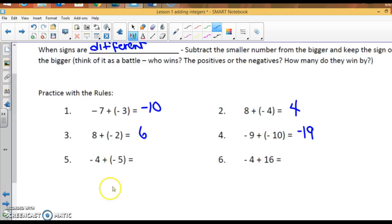Negative 4 plus negative 5 is negative 9. Negative 4 plus 16. I'm going to change this one. Make this 4 plus negative 16. They are different. So, you subtract, which will be 12. Take the sign of the larger. Negative 12.